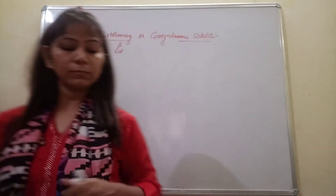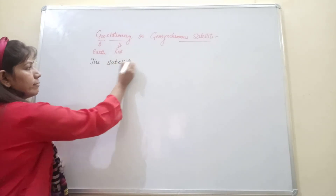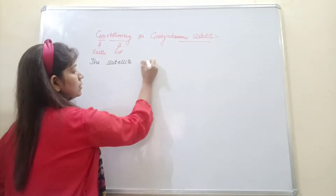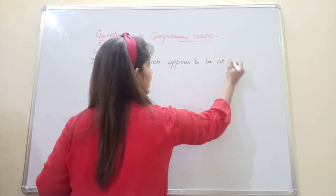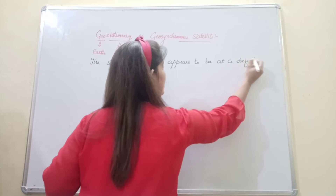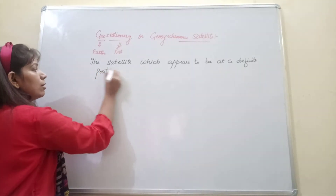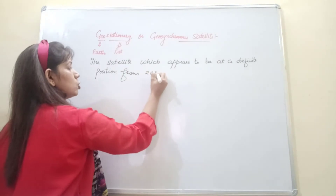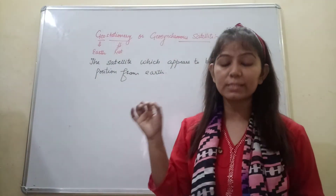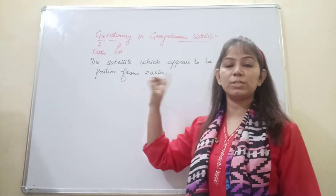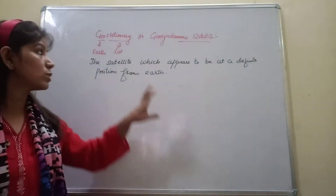A satellite which appears to be at a definite position from Earth — that is known as a geostationary satellite. It should not move from one place to another relative to Earth. That type of satellite is known as a geosynchronous satellite.